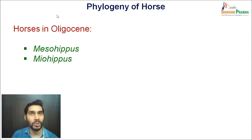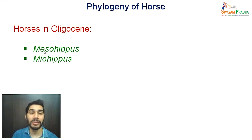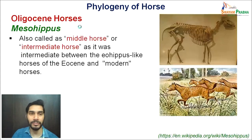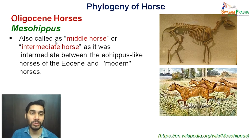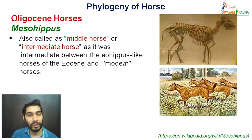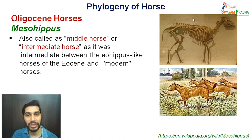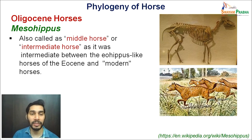Moving to the next epoch — the Oligocene — we will discuss two forms: Mesohippus and Miohippus. Mesohippus is also called the middle or intermediate horse, as 'meso' means middle and 'hippus' refers to horse. It was intermediate between Eohippus, the most primitive form of the Eocene, and the modern horse of the Holocene or Pleistocene epoch. Here you can see the fossil skeleton of Mesohippus and the redrawn image of what it probably looked like.